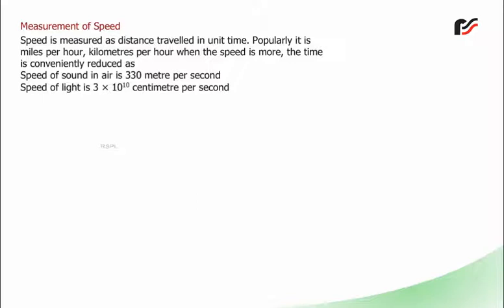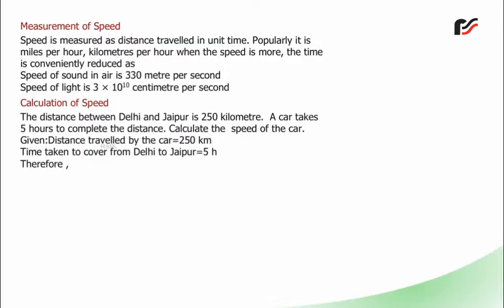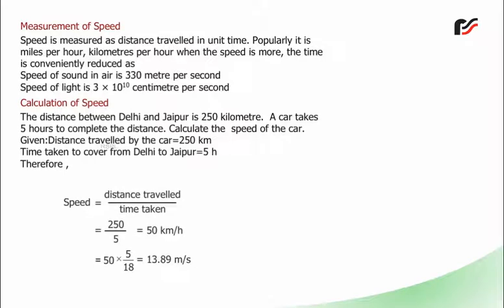The speed of light is 3 × 10¹⁰ centimetres per second. Calculation of speed: The distance between Delhi and Jaipur is 250 km. A car takes 5 hours to complete the journey. Speed = distance ÷ time = 250 ÷ 5 = 50 km/h, which equals 50 × 5/18 = 13.89 m/s.